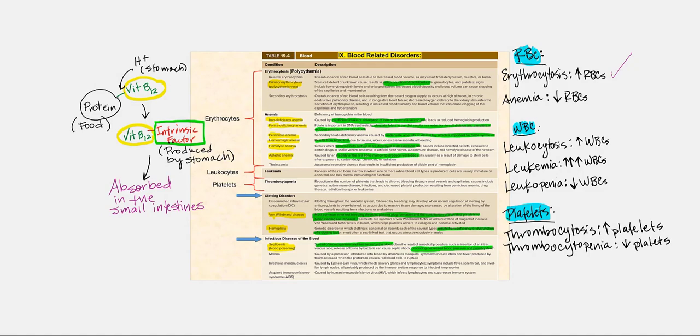However, if we have low levels or low concentrations of circulating red blood cells, then that's referred to as anemia. While with the leukocytes, if we have elevated or higher concentrations of white blood cells in circulation, then that's referred to as leukocytosis.